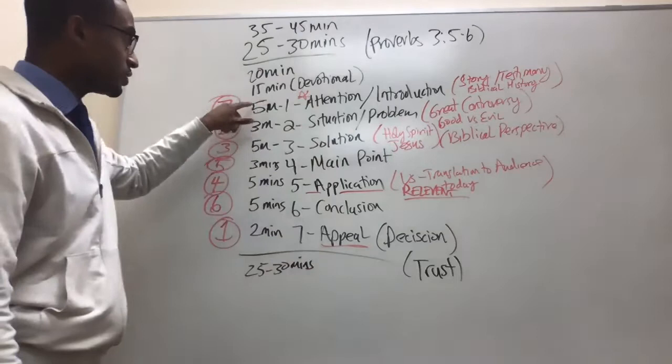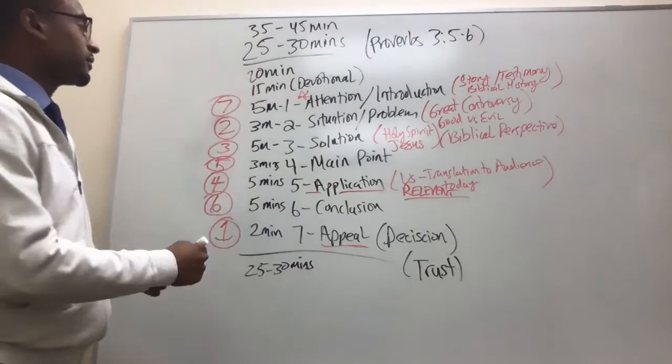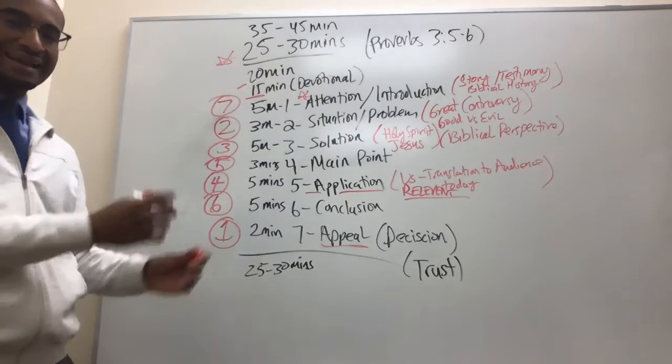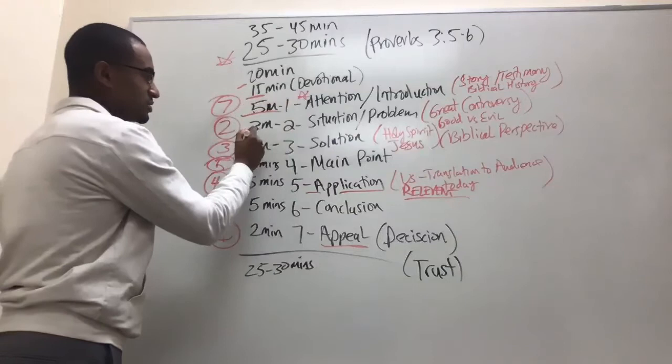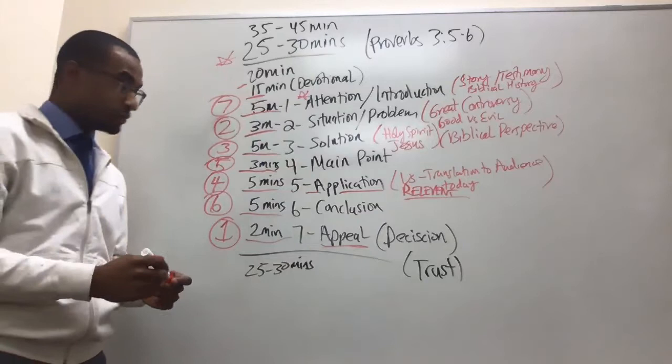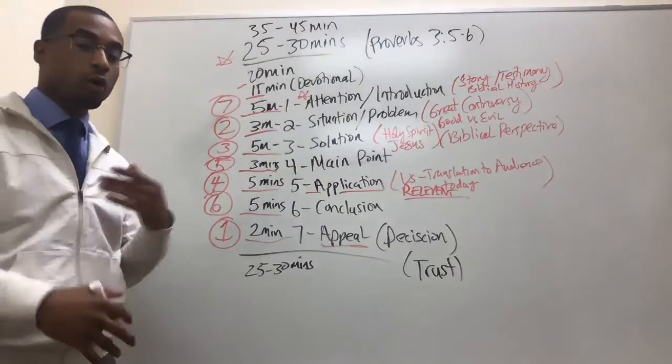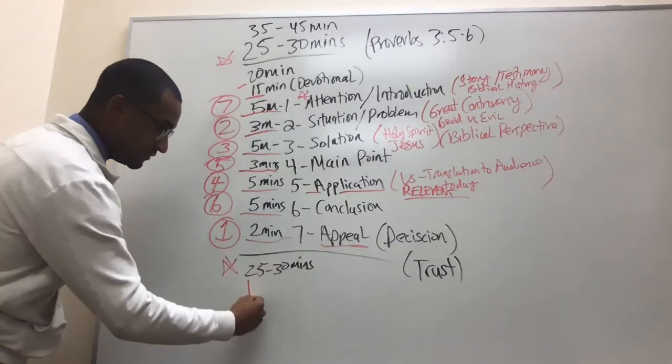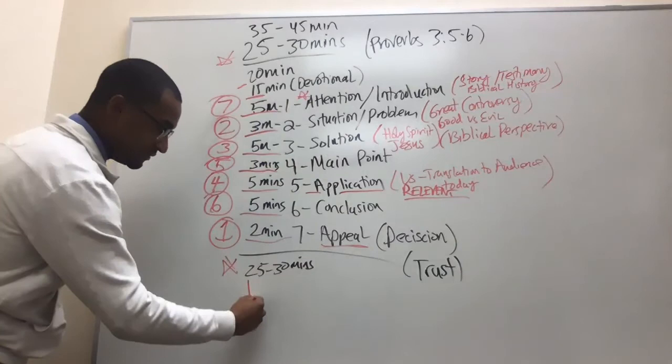Now how do you get it into the minutes where it's organized? You need to gauge your time — whether it's 15 minutes, 20 minutes, or 25 to 30 minutes. How much time do I spend on the attention, the situation, the solution, the application, the conclusion, the appeal? This helps you gauge how much time to spend on each section, and then you can practice and make sure you're staying within your time.